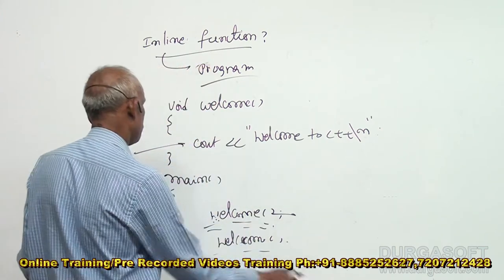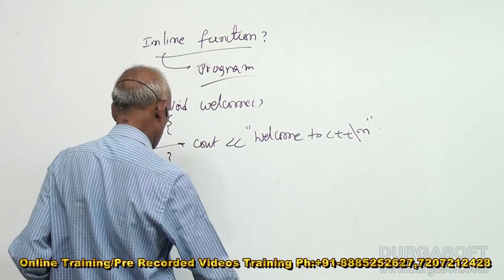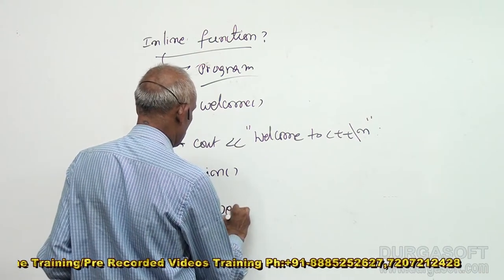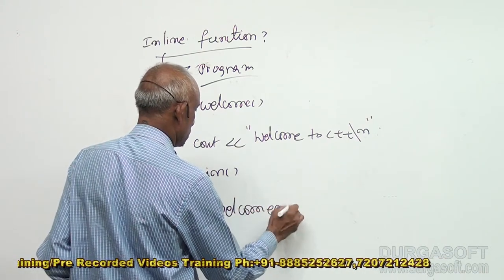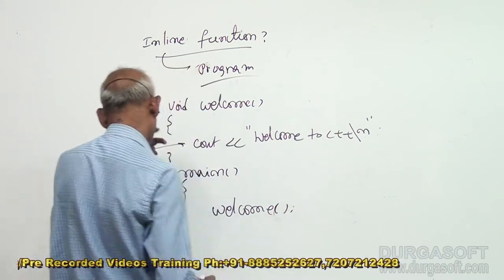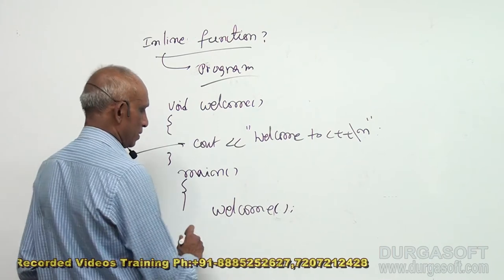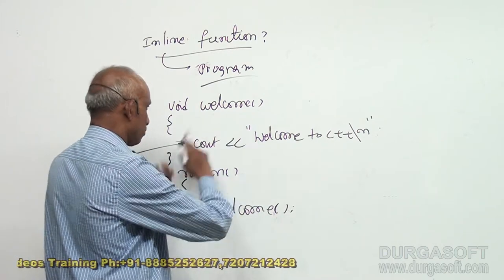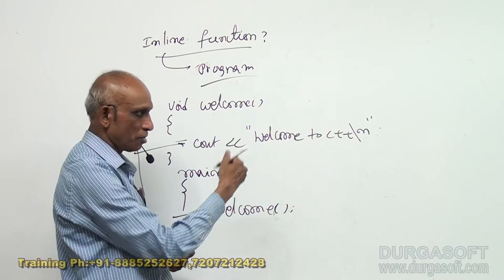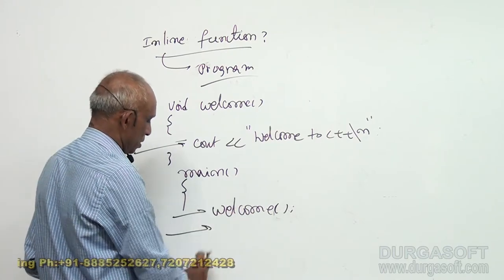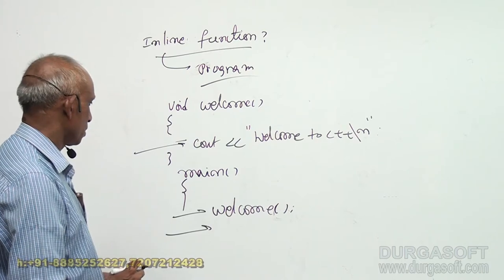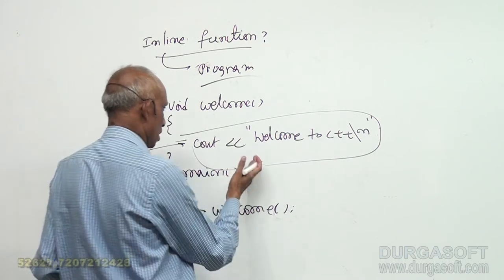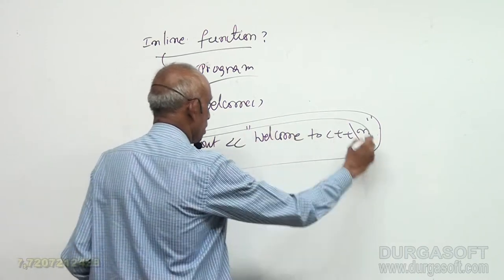Let me explain again. In the main function, suppose I call this function welcome. When I call welcome, the current address is stored on the stack, then control is transferred to the welcome code. After finishing that code, the address of main is restored from the stack and execution continues. Suppose I call this function 100 times somewhere in the program — then 100 times the address is saved and restored, in addition to the actual code.